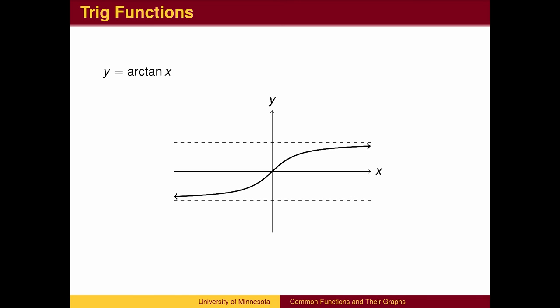The inverse of the tangent function, also called the arctangent, outputs angles associated with the tangent values. The domain is the possible tangent values, which are all real numbers. The range is the angles in the fourth and first quadrants, from negative pi over 2 to pi over 2.